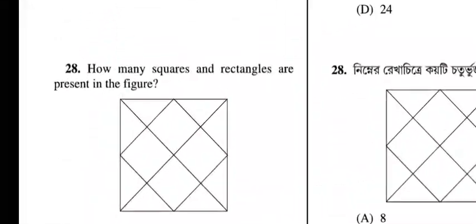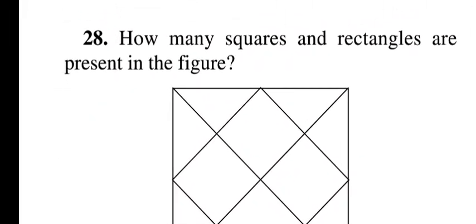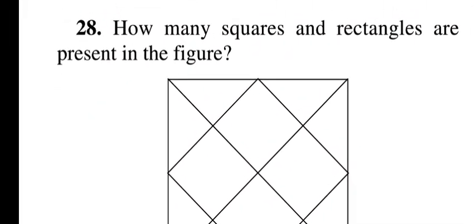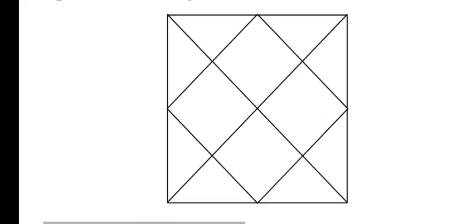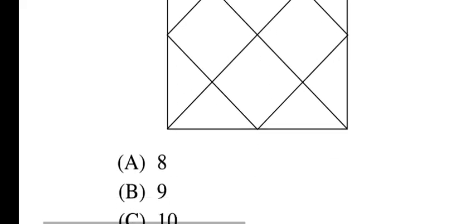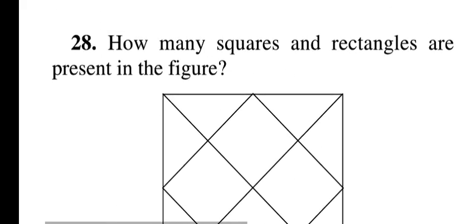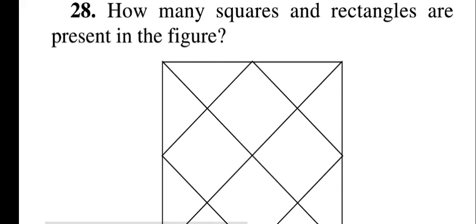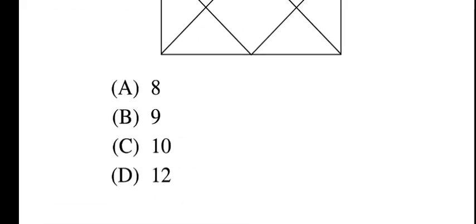Question twenty-eight: how many squares and rectangles are present in the given figure? Options: 8, 9, 10, 12. Question twenty-eight, option C is correct: 10.